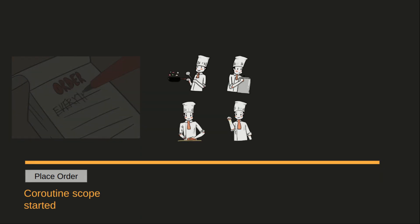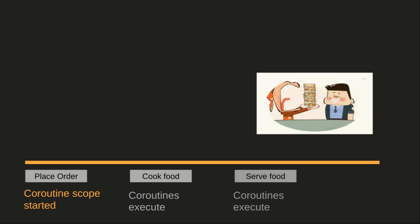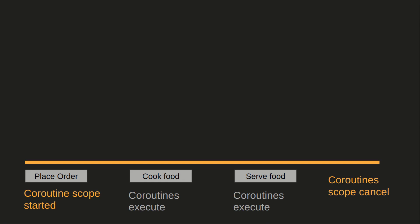Let's look at a simple example explaining this concept. Assume someone has gone to a restaurant and is placing an order. A coroutine scope is started. Because the order is placed, the chef starts to cook — a new coroutine is started and executed under the same scope. After the chef finishes cooking, the food goes to the customer, and another coroutine is executed. After this, the coroutine either moves to a cancelled or completed state, and the scope is completed. We've executed two coroutines inside the same scope — this is structured concurrency in Kotlin coroutines.